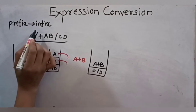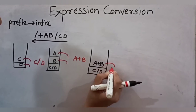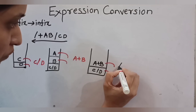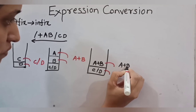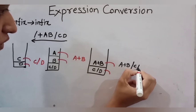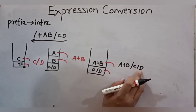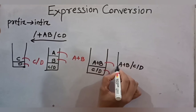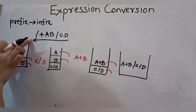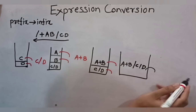Next is the division operator again. Whenever an operator comes, we delete the topmost two operands from the stack. Along with this division operator, we form the combination where A plus B is the first operand, then the division operator, then C slash D as the next operand. This becomes one infix expression and is pushed onto the stack. Our expression is now over, so the final result is present on the stack, which we delete and print.